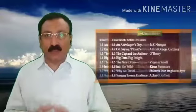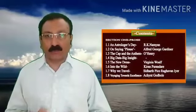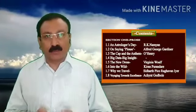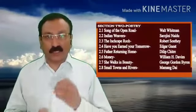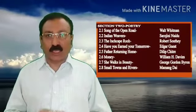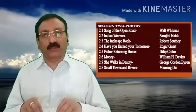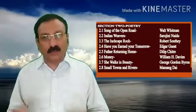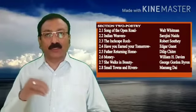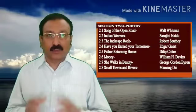The first section is entitled as Prose Lessons and has eight prose lessons written by Indian as well as British and American authors or writers. The second section is entitled as Poetry and has eight poems. These poems are also written by Indian poets as well as British and American poets.